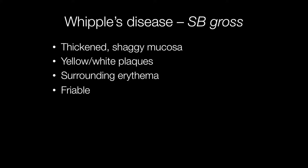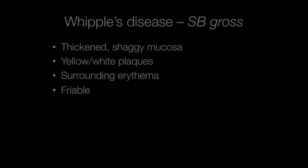When the small bowel is affected by Whipple's disease, the mucosa has a rather thick and shaggy friable appearance with yellow and white plaques surrounded by areas of erythema.